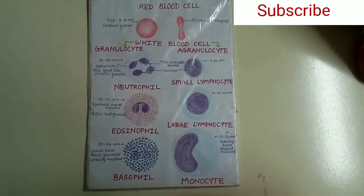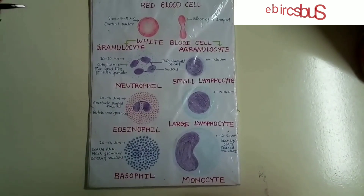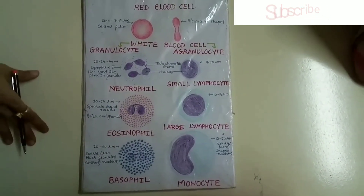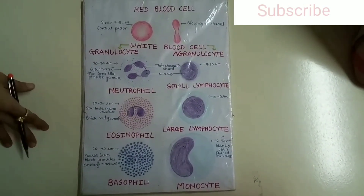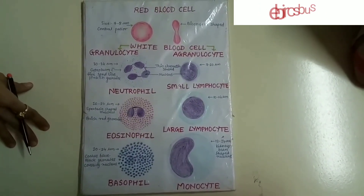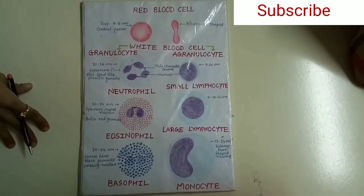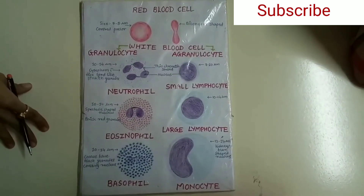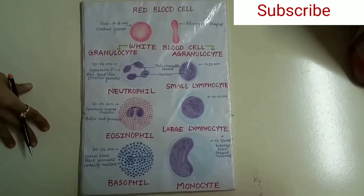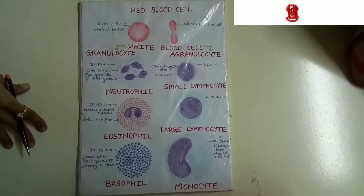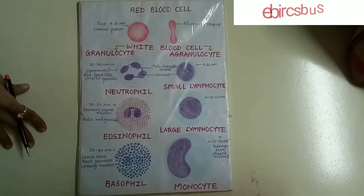Leukocytes are identified by their size, nucleus, cytoplasm, color of the cytoplasm, granules present in the cytoplasm, and the cytoplasm-to-nucleus ratio.